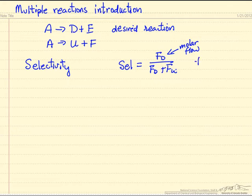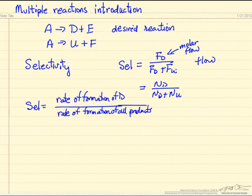This would be for a flow reactor. If we were looking at a batch reactor, we might look at the final number of moles of D in the reactor over the number of moles of D plus U, where this is just total moles. So in general, we might think of selectivity as the rate of formation of our desired product D over the rate of formation of all products. We may have three, four, five, and more reactions taking place simultaneously.